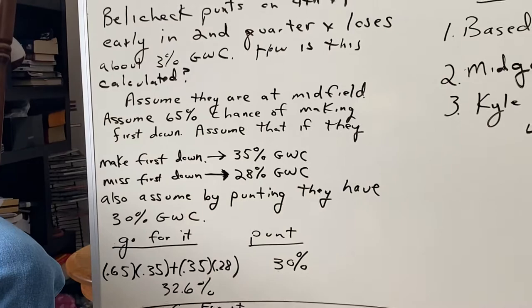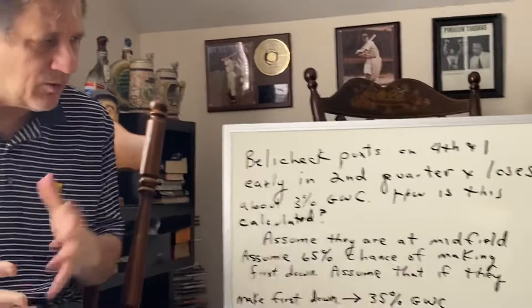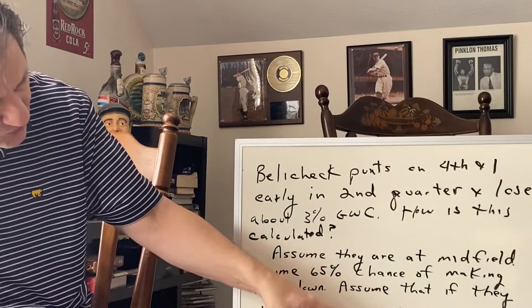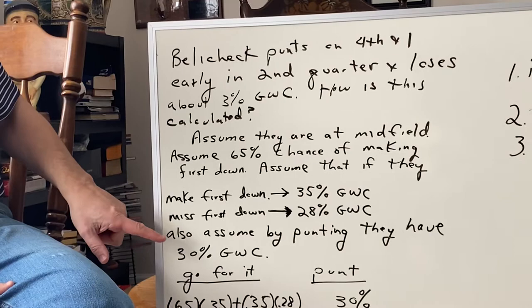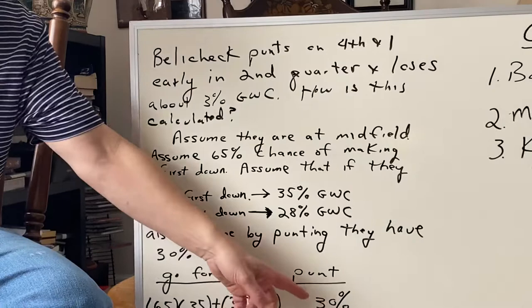Now, there's some discretion involved. You have the relative strengths of the teams, certainly, and one person's adjustment for that might very well be different than another person's adjustment. But these numbers should be in the ballpark. We'll do some number crunching. If they punt, let's assume they have 30% game-winning chances. Again, that's based on historical norms.